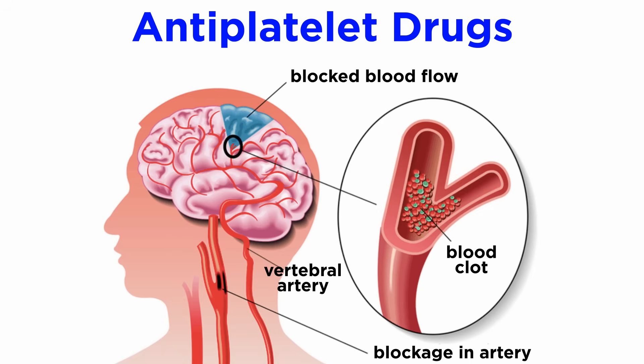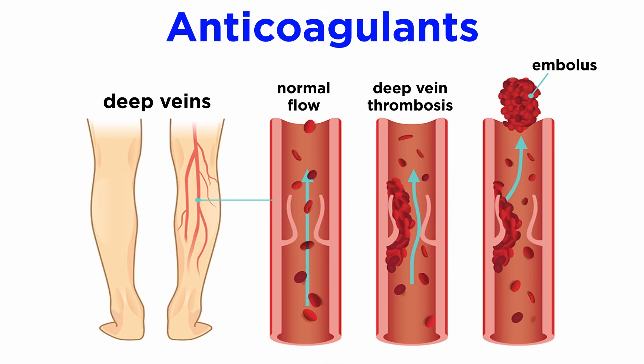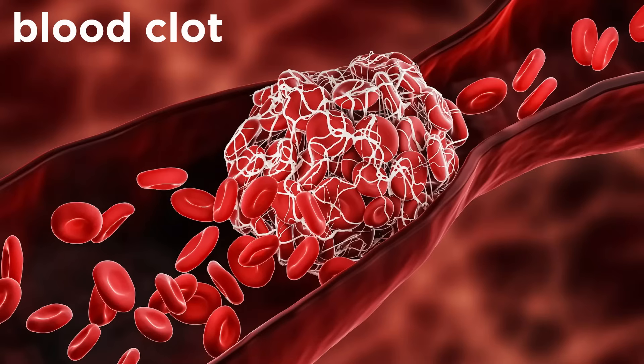We just got finished discussing antiplatelet pharmacology and how these drugs reduce the risk of arterial cardiovascular disease. In this tutorial, we will continue to discuss anticoagulant drugs, which influence blood clot generation, but are used primarily to reduce venous thromboembolism, atrial fibrillation, and deep vein thrombosis.